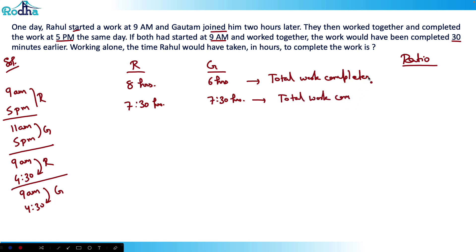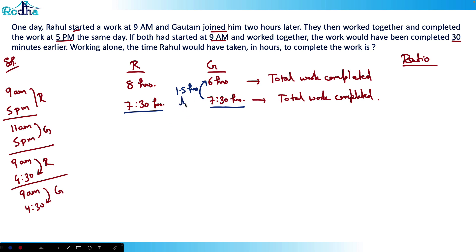This is a common sense kind of question. If both work for 7.5 and 7.5 hours the work is completed. Now comparing the two cases: Gotham is working 1.5 hours less in the second case. To compensate, Rahul needs to work 0.5 hours more.